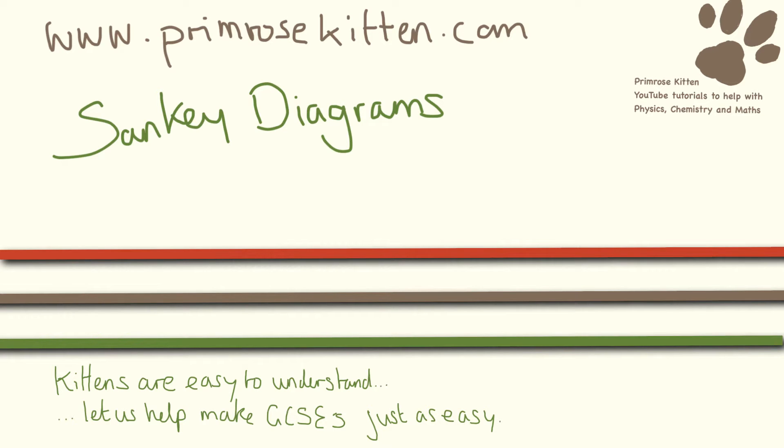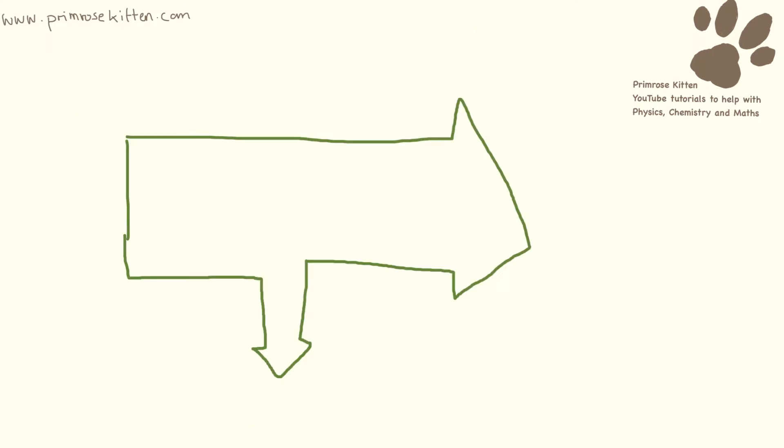Sankey diagrams sound odd, but once you understand them, they're really nice and easy. Sankey diagrams just tell us where the energy ends up. If it goes this way, it is the useful energy. And if it goes down here, it is the wasted energy.